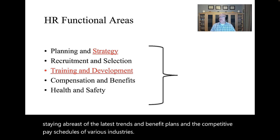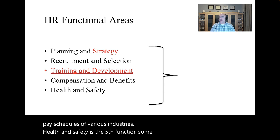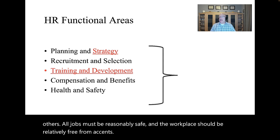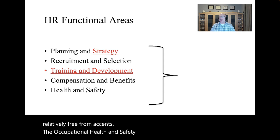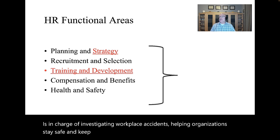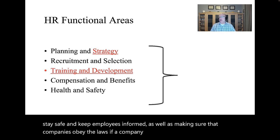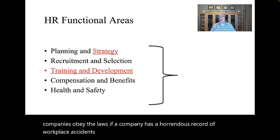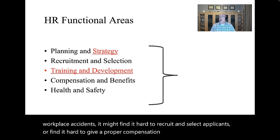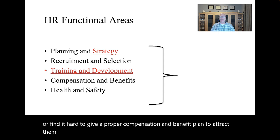Health and safety is the fifth function. Some jobs are simply riskier than others. All jobs must be reasonably safe and the workplace should be relatively free from accidents. The Occupational Health and Safety Administration, also known as OSHA, is in charge of investigating workplace accidents, helping organizations stay safe and keep employees informed, and making sure that companies obey the laws. If a company has a horrendous record of workplace accidents, it might find it hard to recruit and select applicants or provide a competitive compensation and benefit plan.